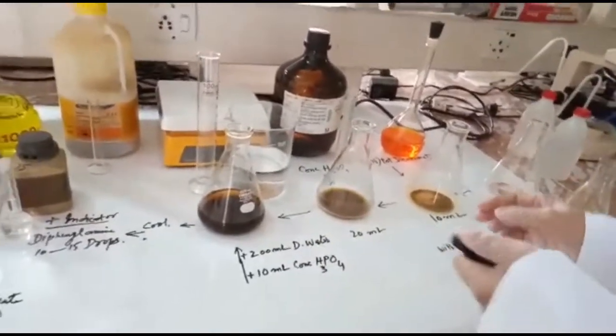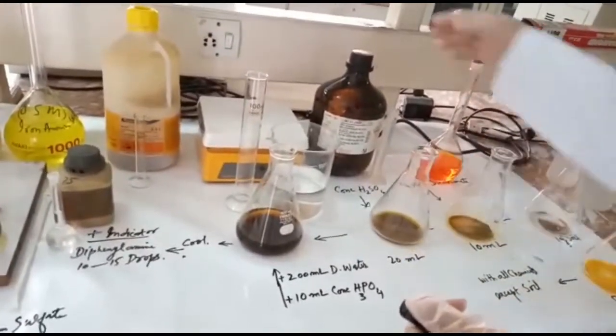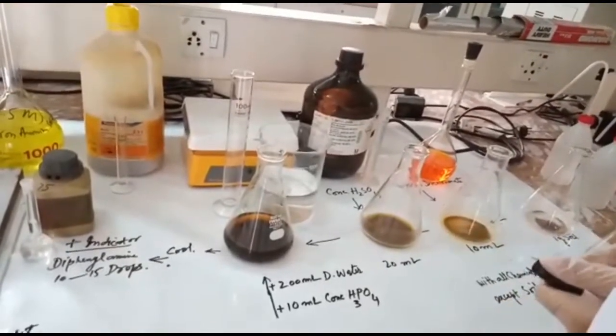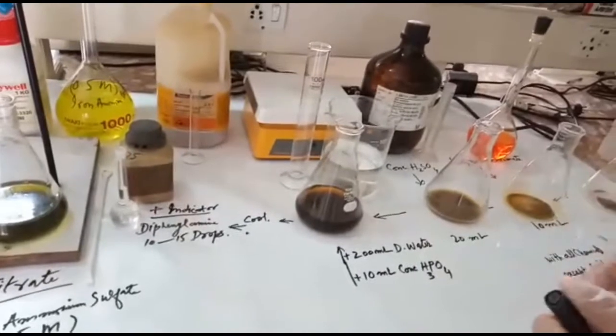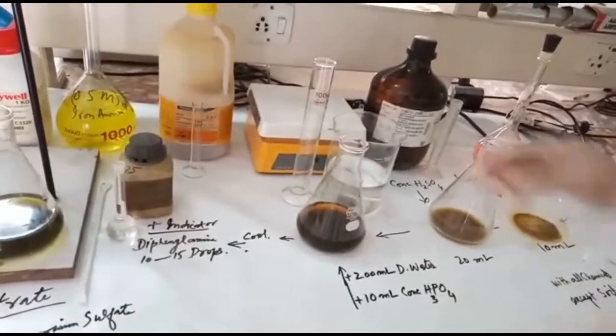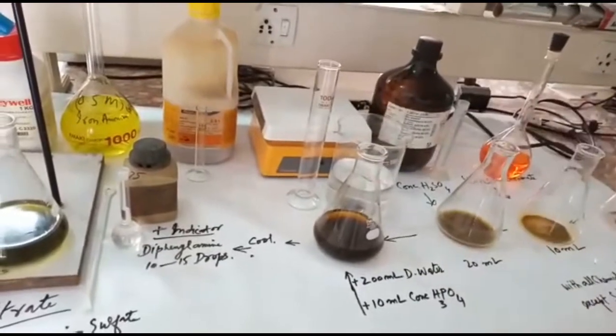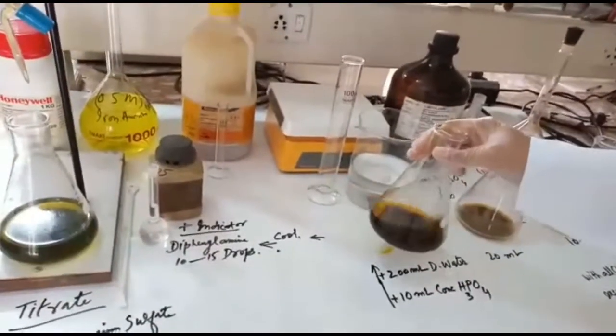After this, we will add 20 ml concentrated sulfuric acid in the flask. Then we will add 200 ml distilled deionized water and 10 ml phosphoric acid.